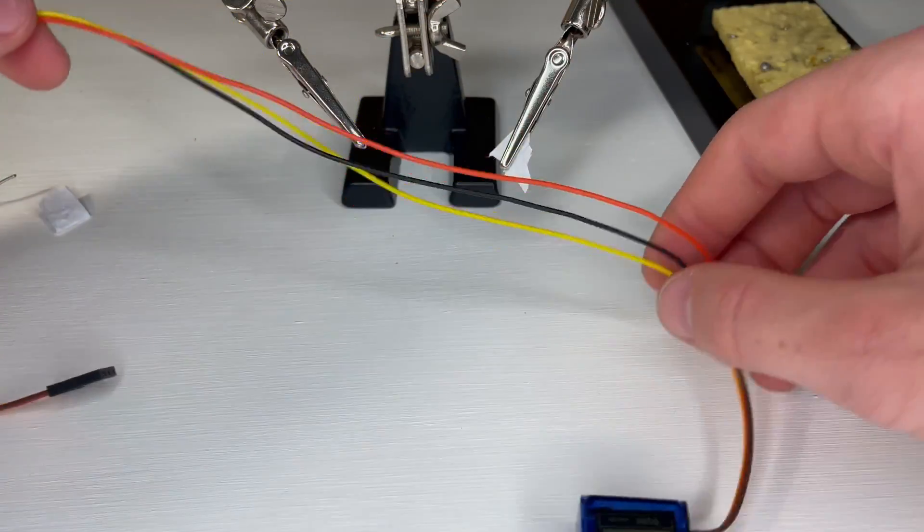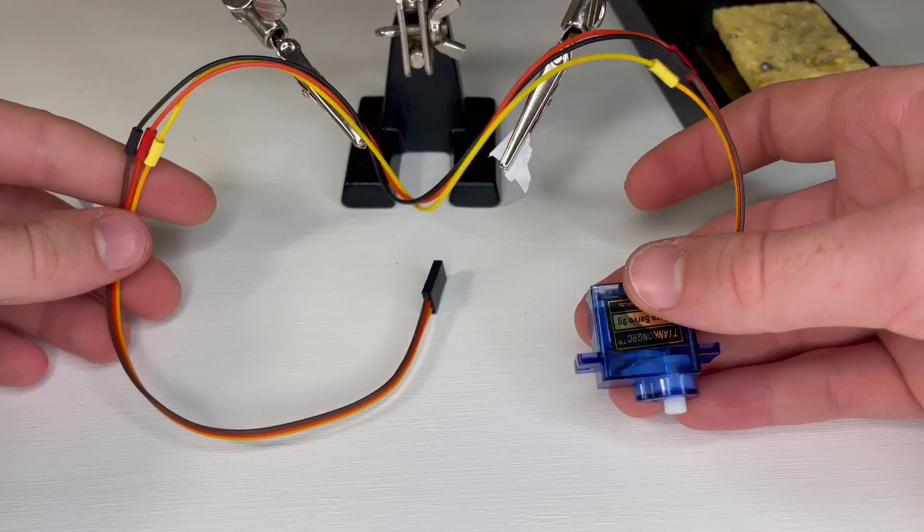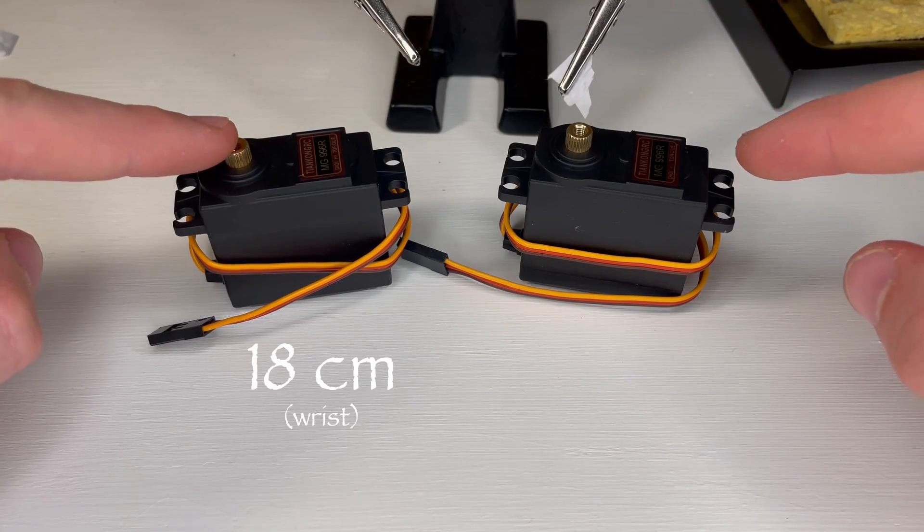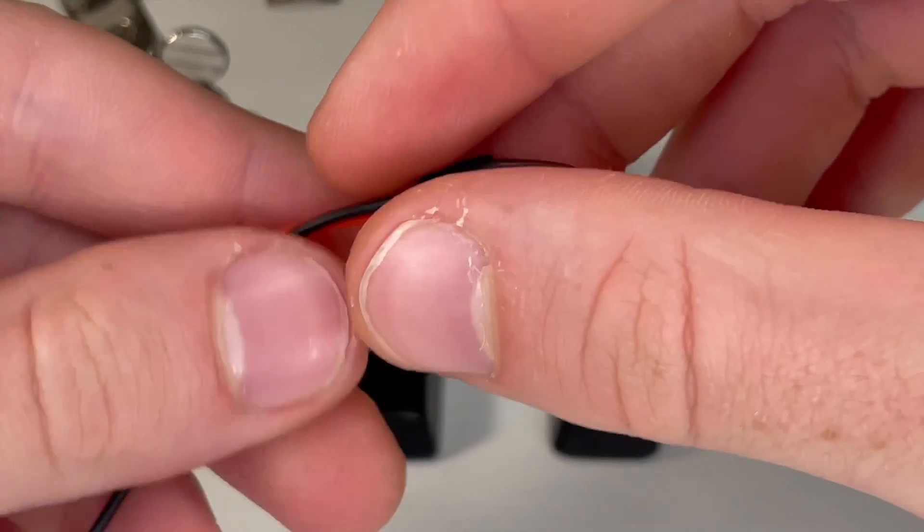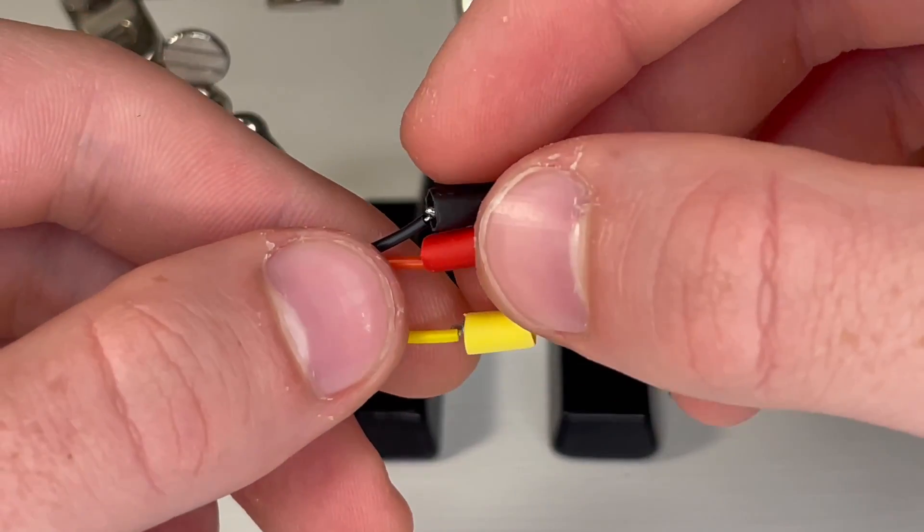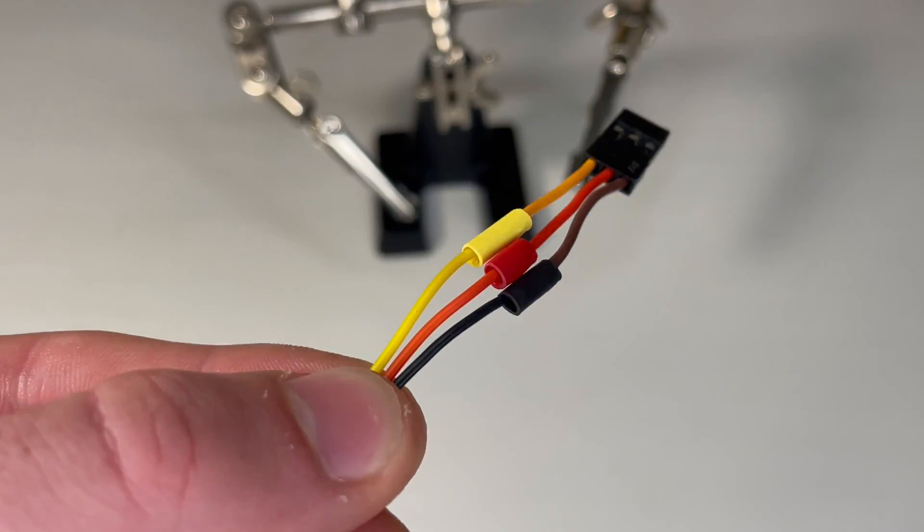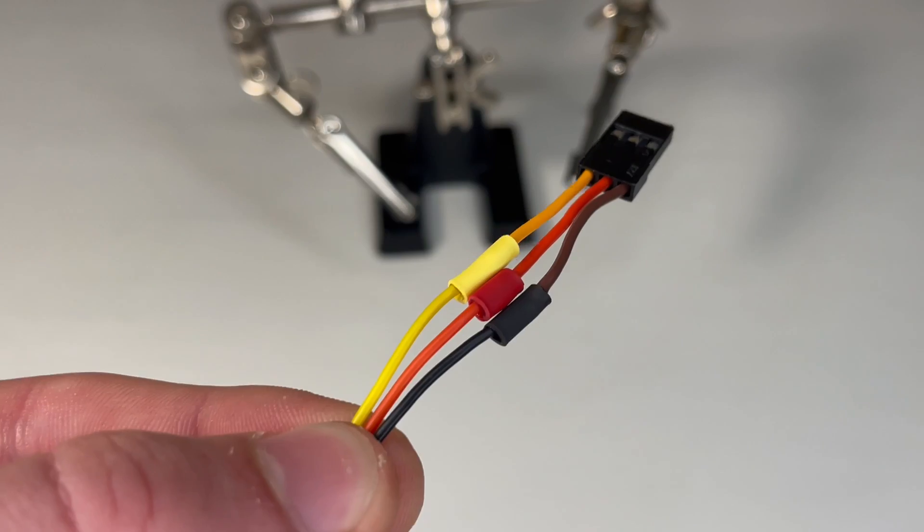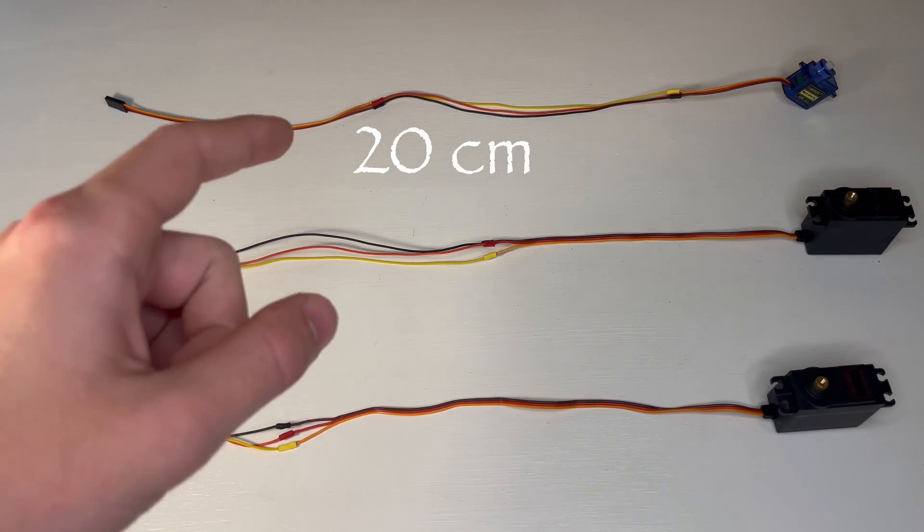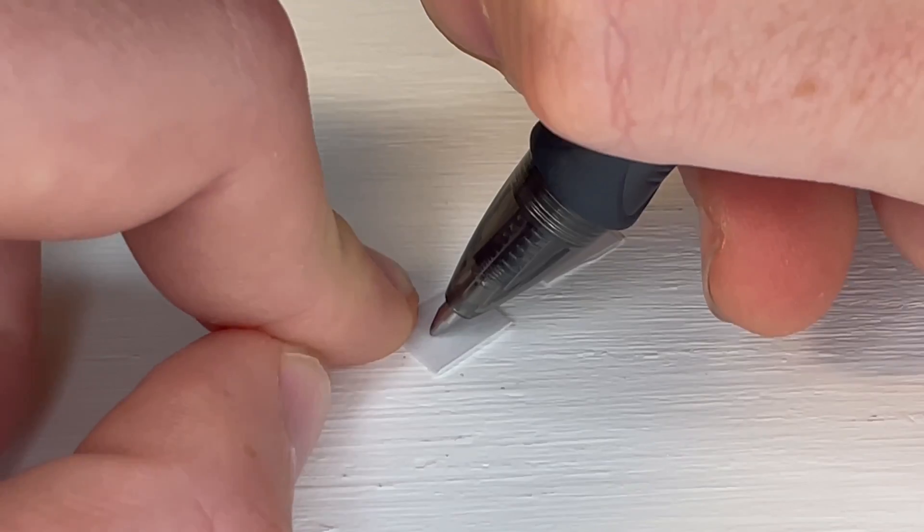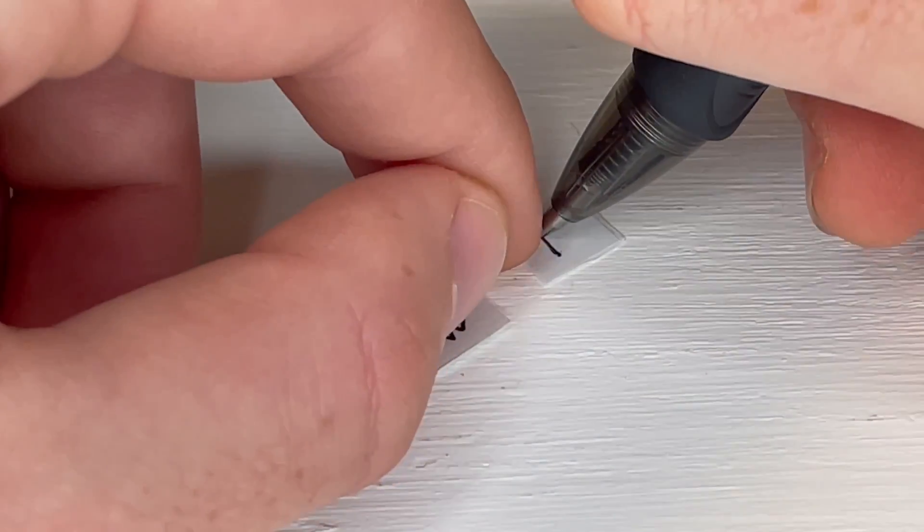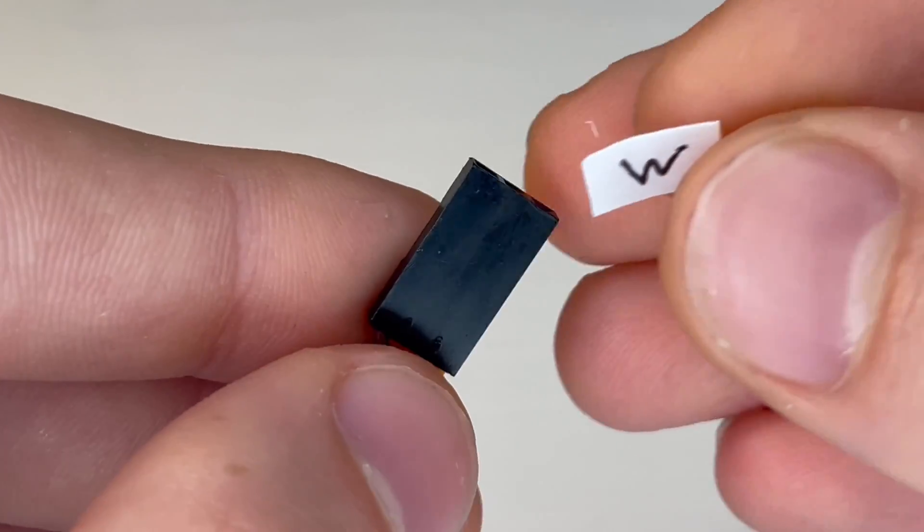Now that that's done we need to make extensions for the wrist servo and the elbow servo. And these will be 18 centimeters and 10 centimeters. After you get those all soldered you should have a 20 centimeter, an 18 centimeter, and a 10 centimeter extension. And I would recommend labeling each servo connector. In this case the letter W is my wrist servo.